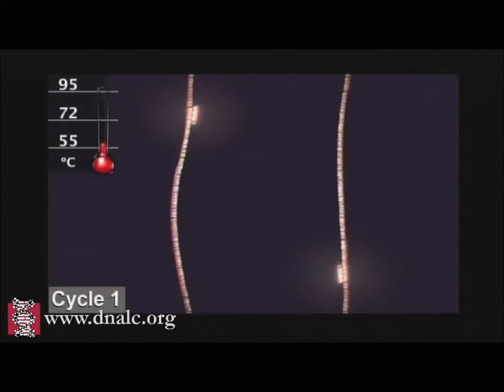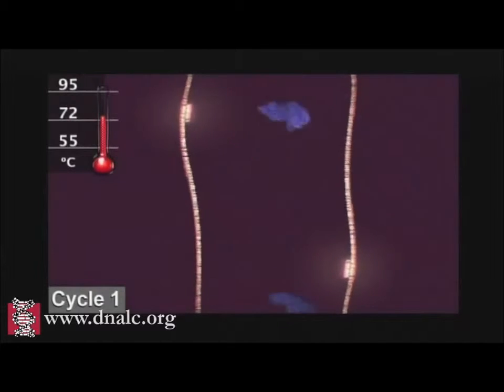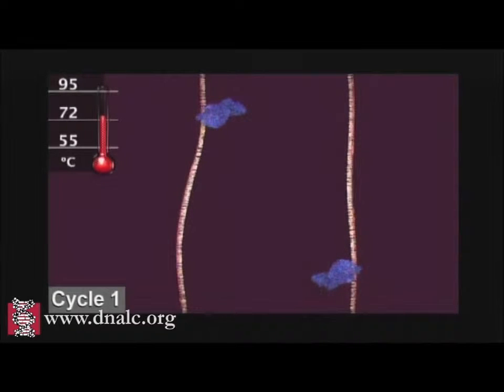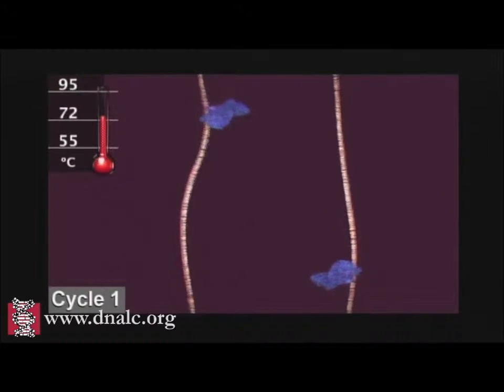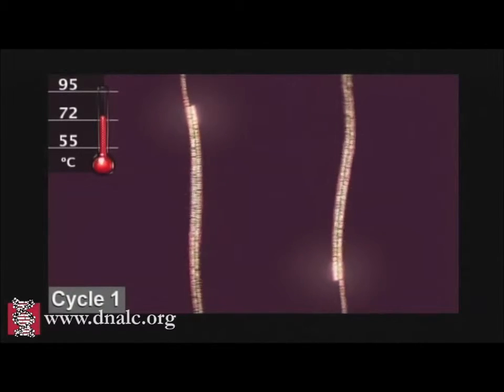The primers bracket the target sequence to be copied. At a slightly higher temperature, the enzyme TAC polymerase, shown here in blue, binds to the primed sequences and adds nucleotides to extend the second strand. This completes the first cycle.